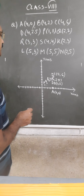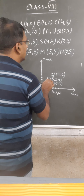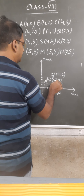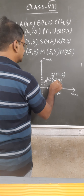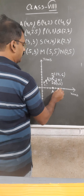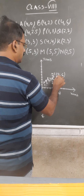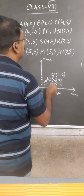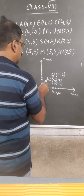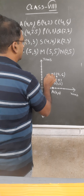Point K is (2, 3), so we plot it here. Then (5, 3) is plotted here. Then (5, 5) — at x equals 5, y equals 5 — plotted here. And (2, 5) — at x equals 2, y equals 5 — is plotted here. That is the last point.